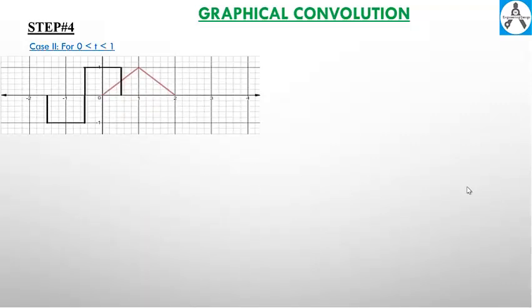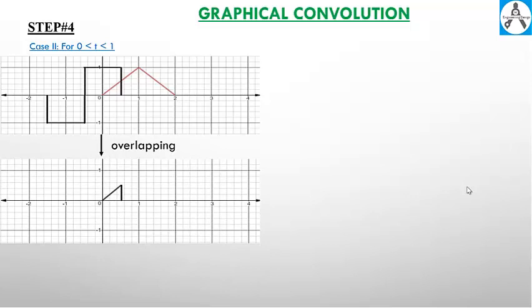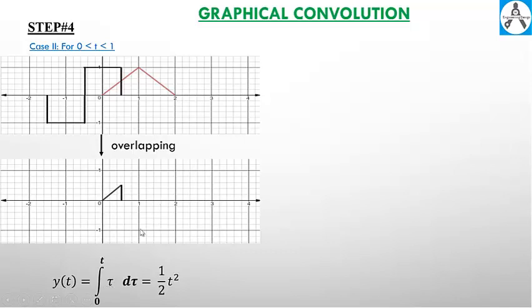Case number two: for t from zero to one. After overlapping we get another signal. Now we integrate from time zero to t. The slope is one and intercept is zero, so we have the equation y of t is equal to tau. Taking the limit from zero to t, after solving we have one half t squared.